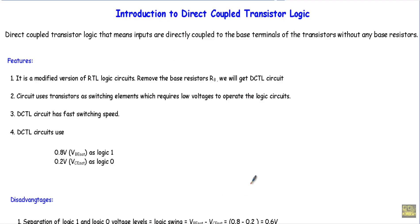In this video, I will introduce you to a new type of logic family known as DCTL logic family, or Direct Coupled Transistor Logic. Direct Coupled Transistor Logic means inputs are directly coupled to the base terminal of the transistors without any base resistors.